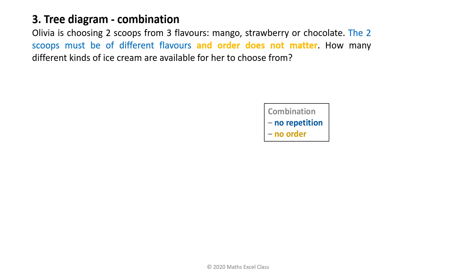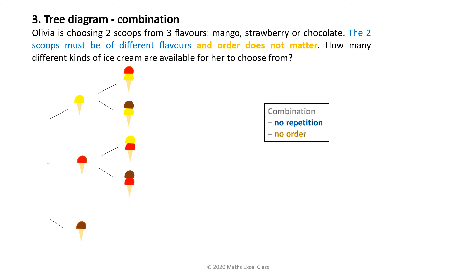For the first scoop, she may choose mango, strawberry, or chocolate. Since the second scoop must be of a different flavour, after choosing mango she can only choose strawberry or chocolate. After strawberry: mango or chocolate. After chocolate: mango or strawberry. She has three choices for the first scoop, but is left with two choices for the second scoop. Three times two equals six.